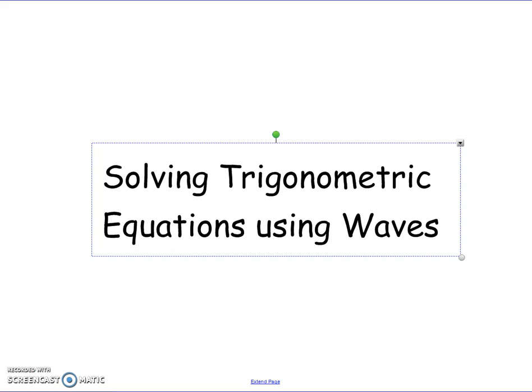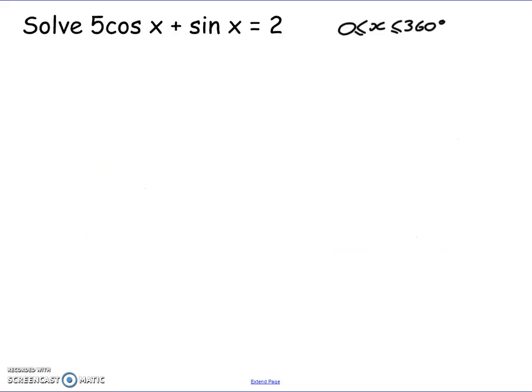The easiest way to do this is demonstrating it with examples. So let's solve 5 cos x plus sine x equals 2 where x is somewhere between 0 and 360 degrees. Now you can look at that and try as you might there's no easy way to solve that when you've got a combination of cos and sine. Your first step has to be to put it in one of the four wave function forms.